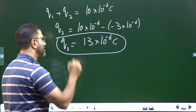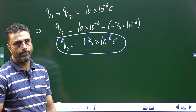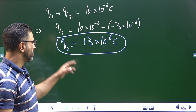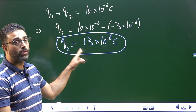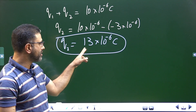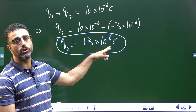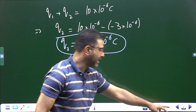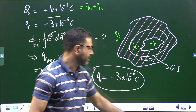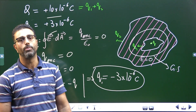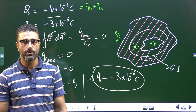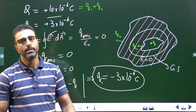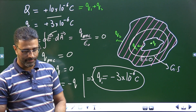So this is a simple exercise on Gauss Law. The charge on the outer surface is +13×10⁻⁶ C and the charge on the inner surface is −3×10⁻⁶ C. That will do for this session.